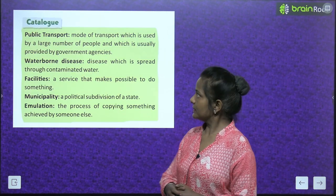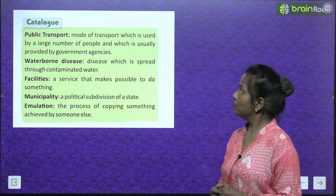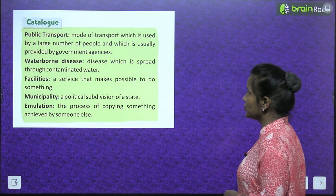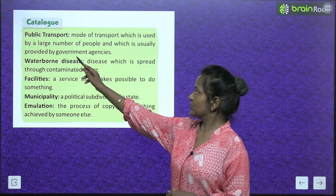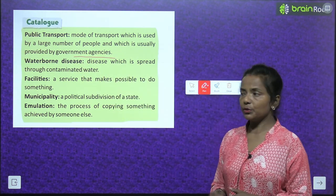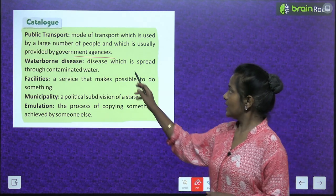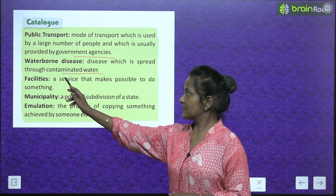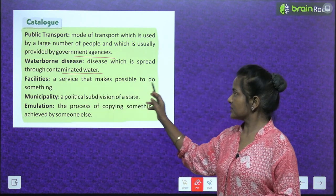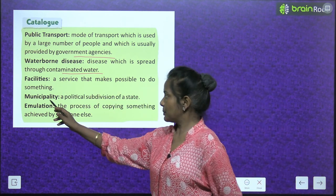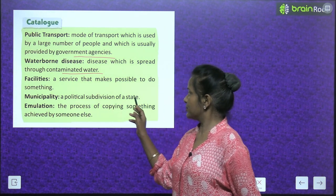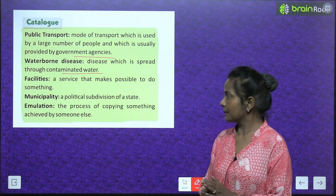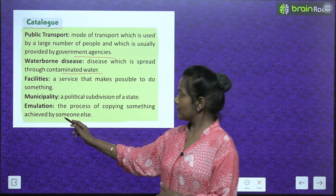Now the catalogue — key terms. Public transport: a mode of transport used by a large number of people, usually provided by government agencies. Waterborne diseases: diseases which spread through contaminated water. Facilities: a service that makes it possible to do something. Municipality: a political subdivision of a state. Emulation: the process of copying something achieved by someone else.